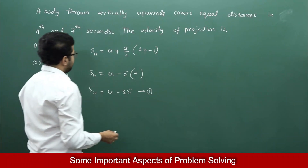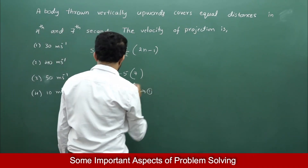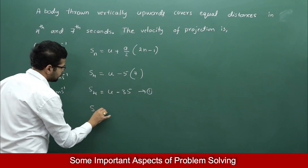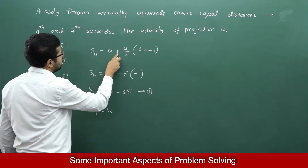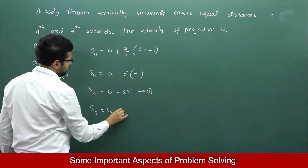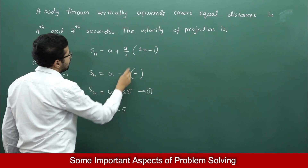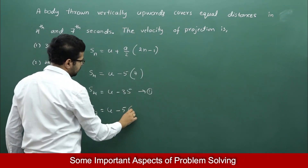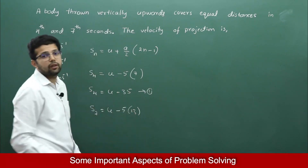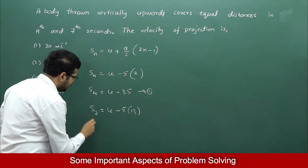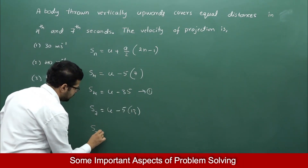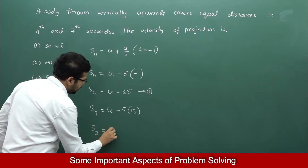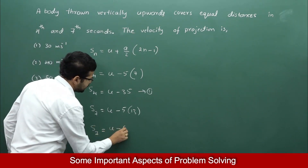What is S7? S7 = u + (−10/2) × (2×7 − 1) = u − 5 × 13 = u − 65. So S7 = u − 65.